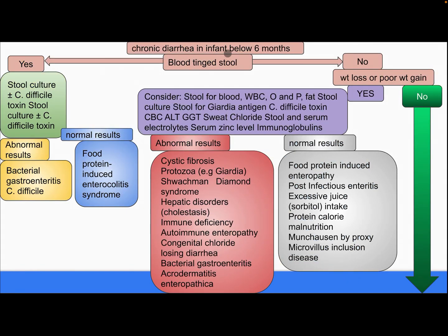For chronic diarrhea in infants below six months of age: is there blood-tinged stool? If yes, perform stool culture with or without C. difficile toxin. If the result is abnormal, the diagnosis is bacterial gastroenteritis with C. difficile. If the result is normal, consider food protein-induced enterocolitis.